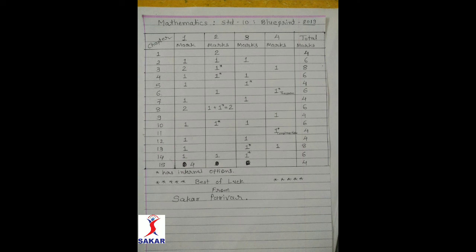Chapter 11: 1 question of 4 marks — this question is a construction with internal option — total 4 marks. Chapter 12: 1 question of 1 mark, 1 question with internal option of 3 marks, 1 question of 4 marks, total 8 marks. Chapter 14: 1 question of 1 mark, 1 question of 2 marks, 1 question with internal option of 3 marks, total 6 marks.